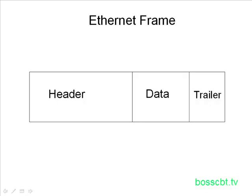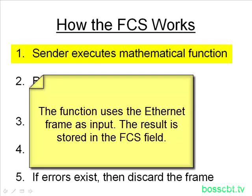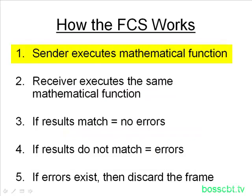There are just a few steps in Ethernet error detection. It starts with the sender of the frame executing a mathematical function. To run this function, it uses the entire Ethernet frame as the input. It runs the mathematical function using the frame as input, and the result is stored in the FCS field. This is similar to running the function 1 plus 1 equals 2 — I store the result 2 in the FCS field, with 1 and 1 as my inputs. I do that and send the frame on its way.